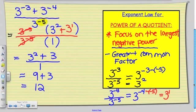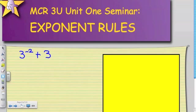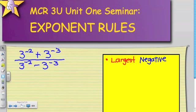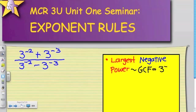Now the next example is going to be similar. However, we're going to have a binomial in both the top and the bottom — plus 3 to the power of negative 3, all over 3 to the power of negative 2 minus 3 to the power of negative 3. For this particular question, remember we're focusing on the largest negative exponent, which is also equivalent to my greatest common factor: 3 to the power of negative 3.